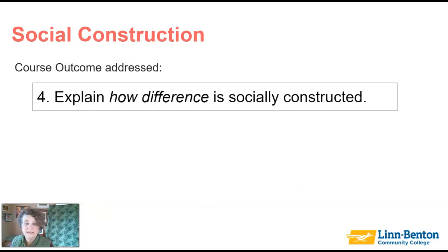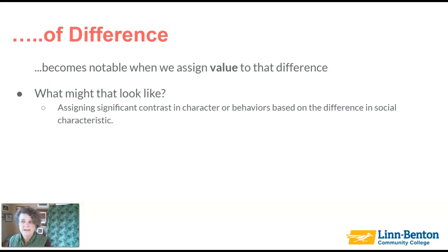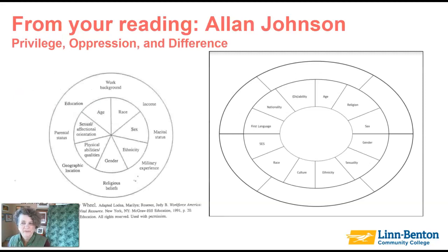The outcome addressed is: explain how difference is socially constructed. When we talk about the social construction of difference, the difference becomes notable when we name it and we assign value to it. When we're talking about people, we're basically talking about assigning a value or a hierarchy to differences in social characteristics.